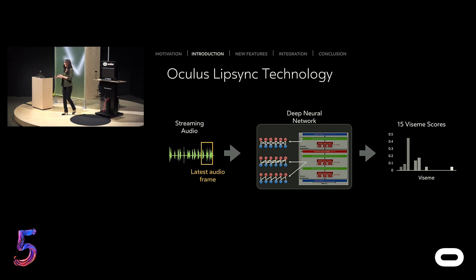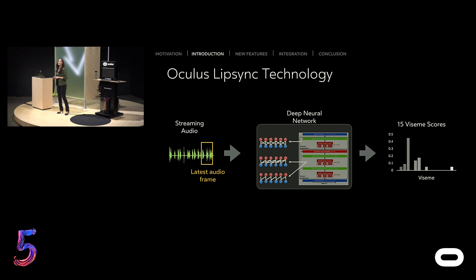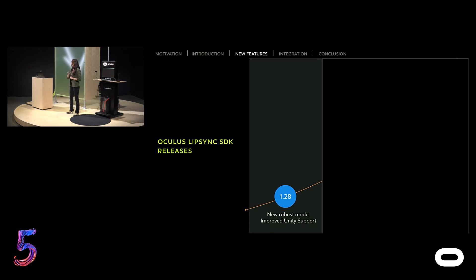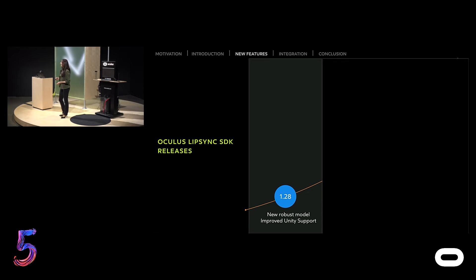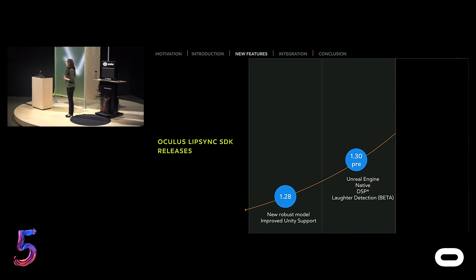For those of you who want to learn more about how these visemes are computed and the deep learning method we are using, you can go into our blog post — we have a lot more details in there. So, let's talk about what we have offered in our packages. In early August, we released version 1.28 of our Lip Sync SDK, which came with a new robust model and improved Unity support. Today, we are giving you version 1.30 of Lip Sync SDK. You're going to get USB sticks pretty soon and will get to use it on your systems.